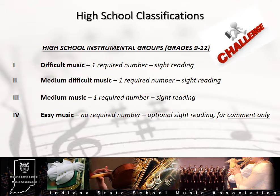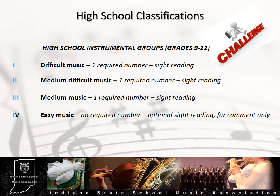Unlike the JME division, there is also a sight reading component required for Groups 1, 2, and 3. Sight reading is optional for Group 4. A Group 4 ensemble opting to complete the sight reading component would receive a score and comments, but the score would not be included in their overall rating.